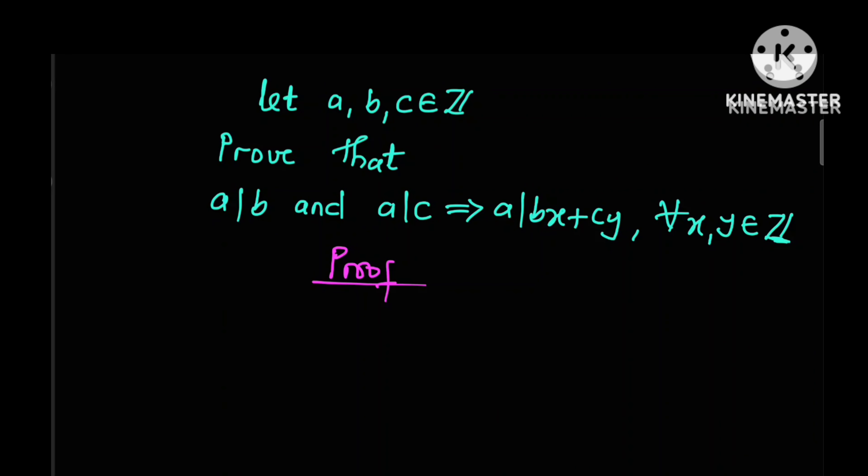Hello everyone, you are once more welcome to this channel. In this tutorial we are going to prove that if a, b, and c are three integers such that a divides b and a also divides c, then a divides any linear combination of b and c — that is, a divides any expression of the form bx plus cy where x and y are integers. As a motivation to this proof, let's consider this example.